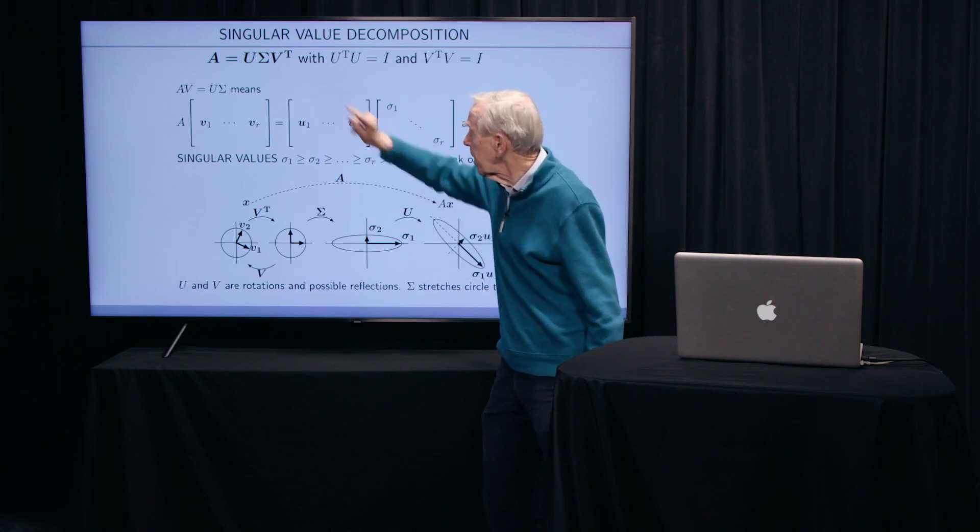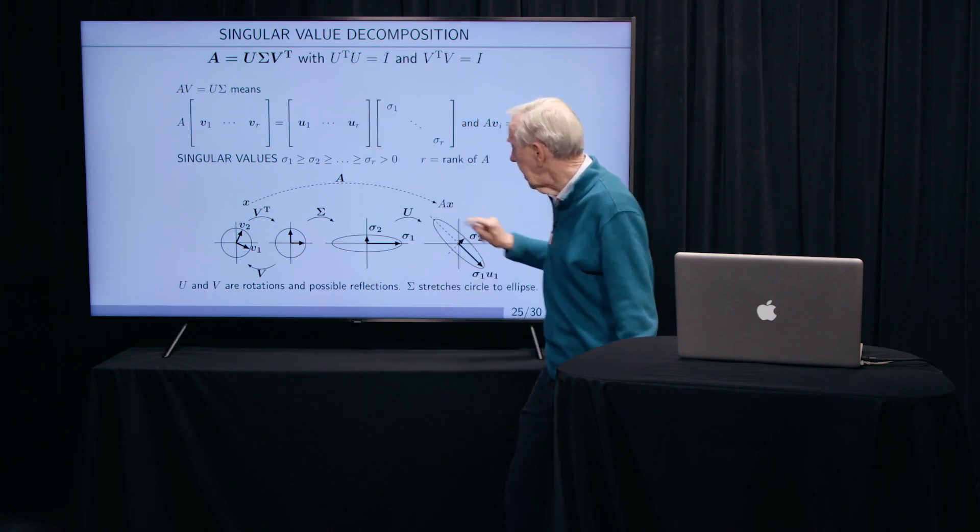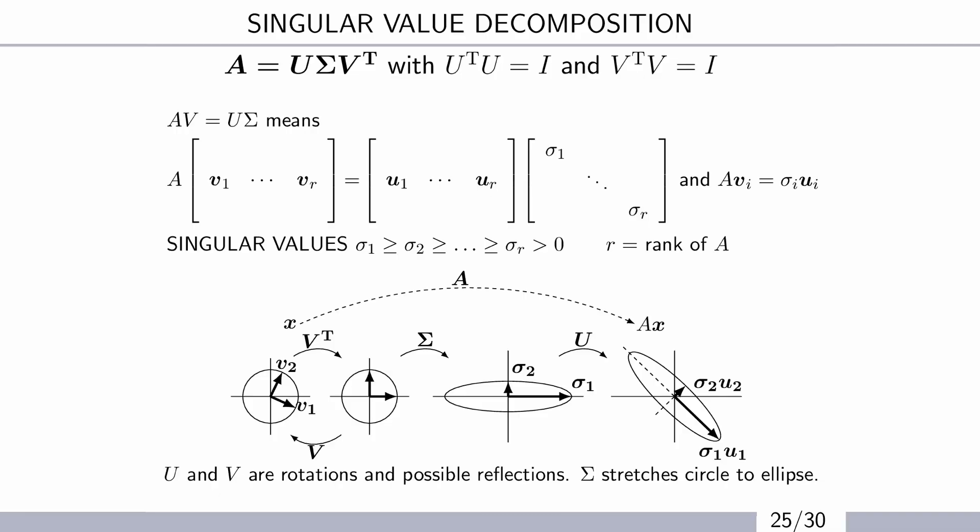And then the last guy, the U, is going to hit last. It takes the ellipse and turns it again. It's again a rotation.